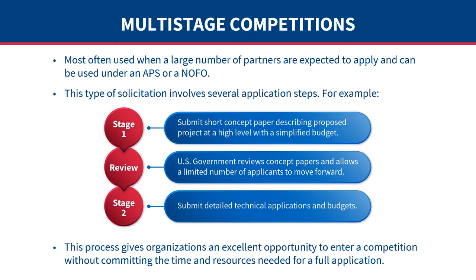For either contracts or grant solicitations, USAID may establish a multi-stage competition system, most often used when a large number of partners are expected to apply. In Stage 1, USAID asks potential applicants to submit a short concept paper describing a proposed project at a high level with a simplified budget. The U.S. government reviews concept papers and allows a limited number of applicants to move forward. In Stage 2, all selected applicants are asked to submit detailed technical applications and budgets. This process gives organizations an excellent opportunity to enter a competition without committing the time and resources needed for a full application.